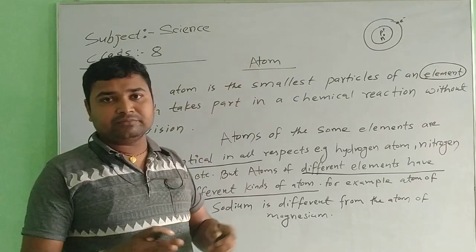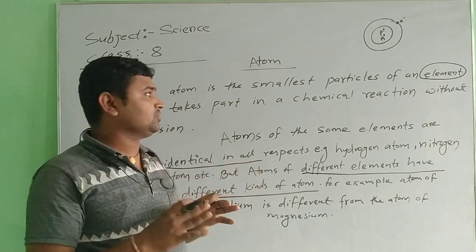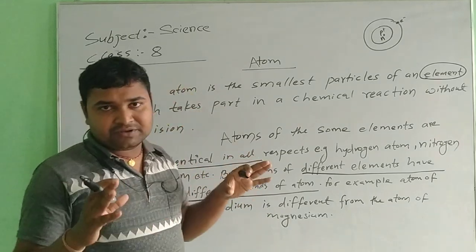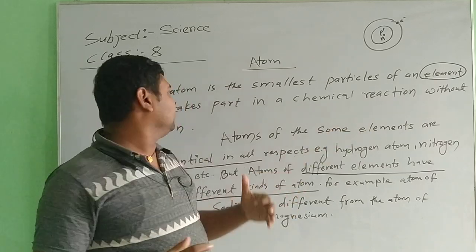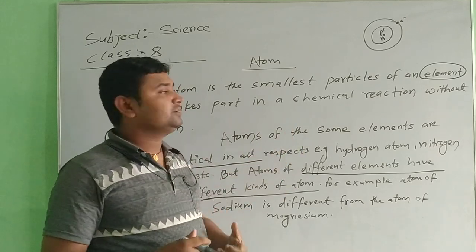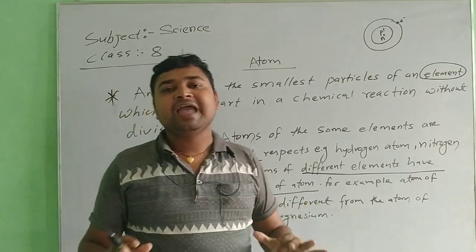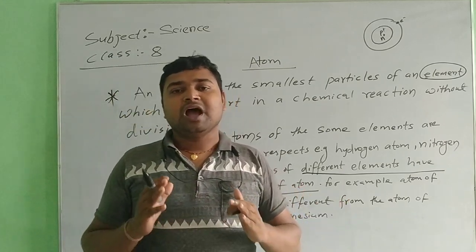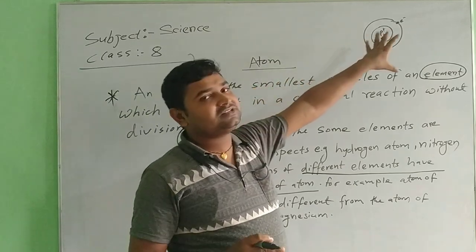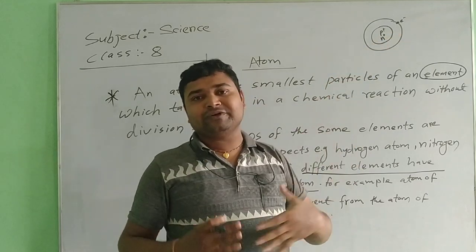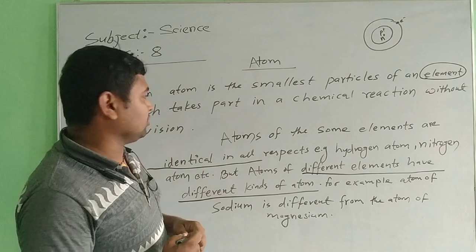It is a very important structure. When you try to understand the structure, first of all, what is an atom? Atom is the smallest particle of an element which can take part in chemical reactions. Now I will tell you about the structures of the atom, and in these structures divisions also take place. In an atomic structure there are electrons, protons, and neutrons. Now let's talk about the structure.